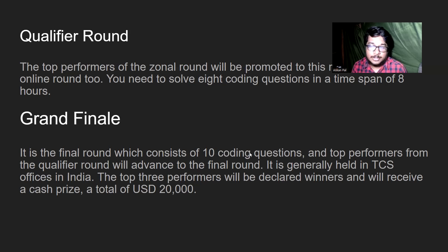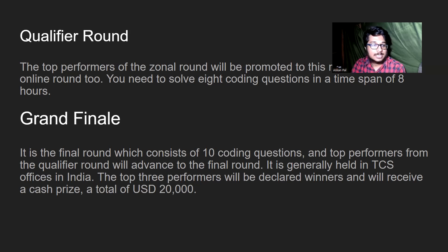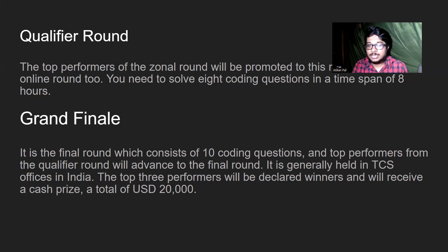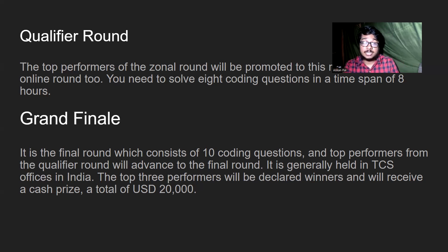We also have the qualifier round. Code Vita is a programming contest where the top performers get a cash prize. The qualifier round selects the top performers from the pre-qualifier round. In the qualifier round, you need to solve six to eight coding questions with a corresponding number of hours. If you do really well in the qualifier round, you get access to the grand finale.